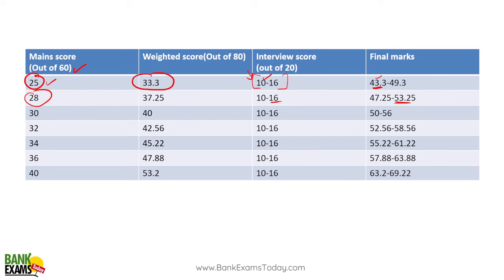So whatever your marks are out of 60, convert them to out of 80 using a weighted average, and then add the interview score which is going to be between 10 to 16. If your interview went really well, use 16; if it went average, use 10 or 12.